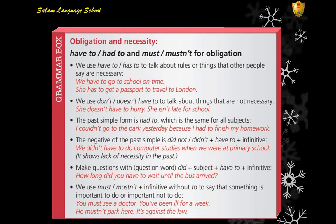Now let's check obligation and necessity. We use 'have to' or 'has to' in the present to talk about rules or things that other people say are necessary. For example: 'We have to go to school on time' or 'She has to get a passport to travel to London.' The negative form — 'don't/doesn't have to' — means something is not necessary. For example: 'She doesn't have to hurry, she isn't late for school.'